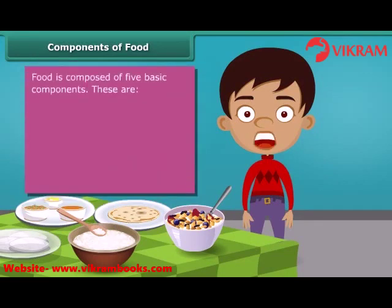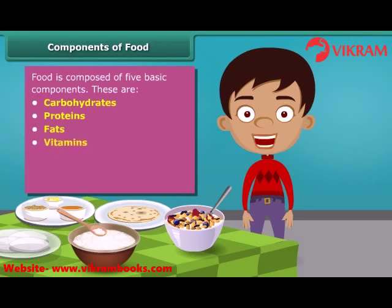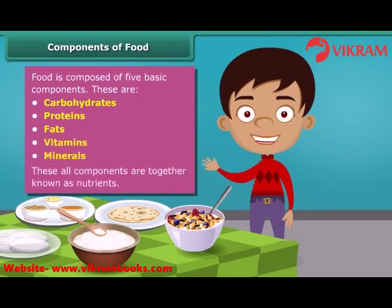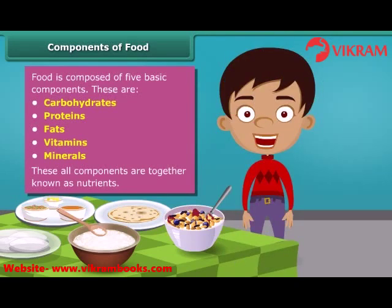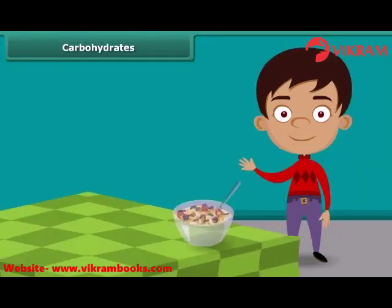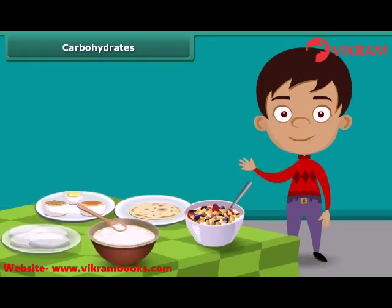Friends, food has five basic components in it. These are carbohydrates, proteins, fats, vitamins, and minerals. All these components together are called nutrients. A body digests food and absorbs these nutrients to provide energy. Some nutrients help us fight against diseases. Each food item contains all nutrients in different amounts and each nutrient plays a different role in the body. Let us know about these nutrients one by one in detail.